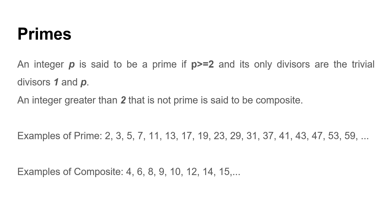First, we need to know what a prime number is. An integer p is said to be prime when its only factors are itself and 1 — no other factors. Examples of prime numbers are 2, 3, 5, 7. Numbers other than prime numbers are called composite numbers. A composite number has more than two factors: 1, itself, and other factors as well. This is the difference between prime and composite numbers.